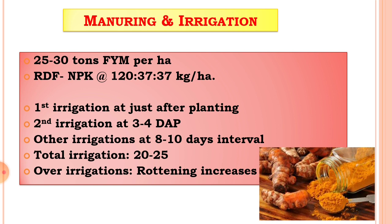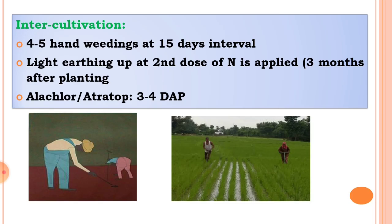This is the irrigation requirement for the turmeric crop. Then inter-cultivation: in inter-cultivation, 4 to 5 hand-weedings are given at 15-day intervals. It depends upon the intensity of weed or weed growth.